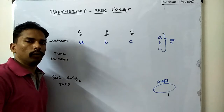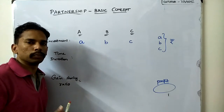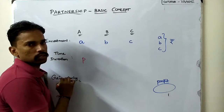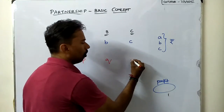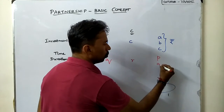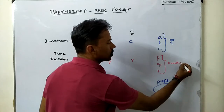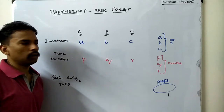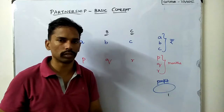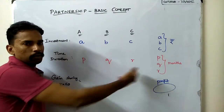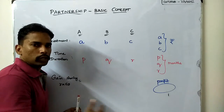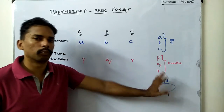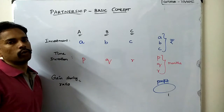Now let's consider the case where all the money invested stays in the business for different time periods. For instance, A's money stays for 'p' months, B's money for 'q' months, and C's money for 'r' months. So p, q, r are the number of months for which their money stays in the business. It can be years, weeks, or days, but it is important that all the time values are in the same units. We now need to find in what ratio they will be sharing the given profit.